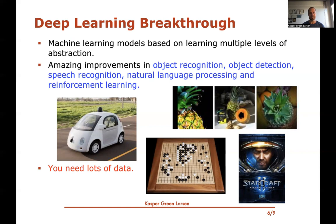The downside is that to train these models you really need a lot of data, which has only been possible in the last ten years or so. You also typically need powerful computers or GPUs to train these models, because there are so many parameters and it takes such a long time.